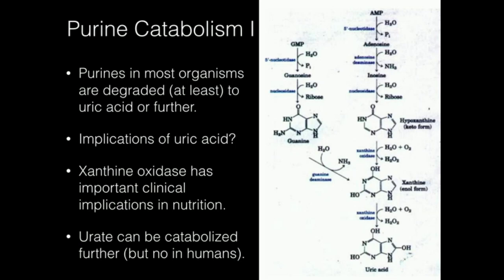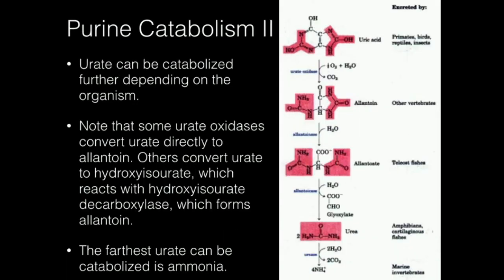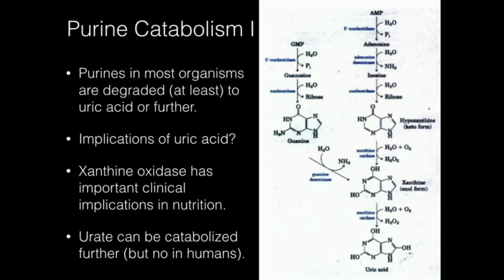In this video, we're going to talk about purine catabolism. I'm going to go through the two stages of it. It's a very interesting pathway. The two purines we're going to start with from this catabolic pathway are GMP, shown on the left of that figure, and AMP.